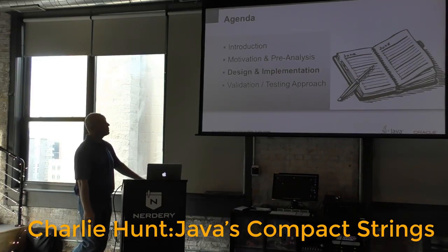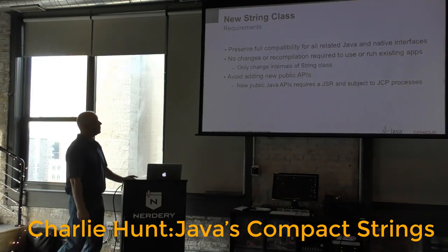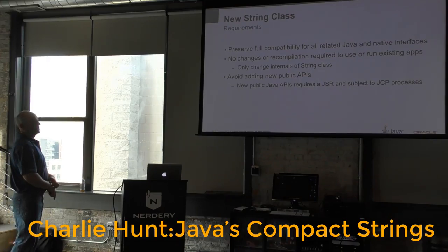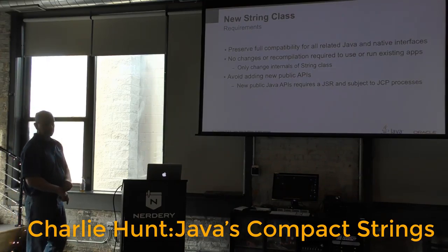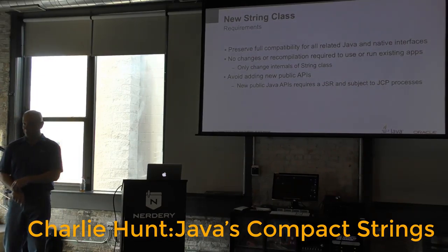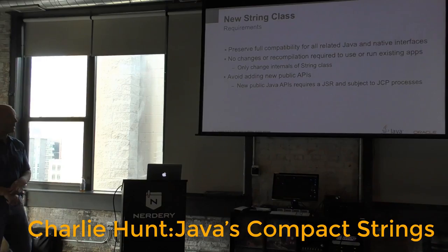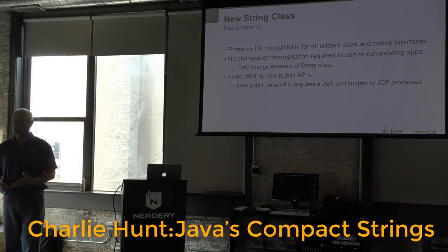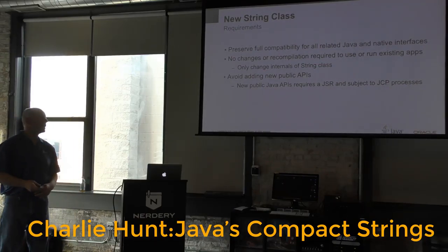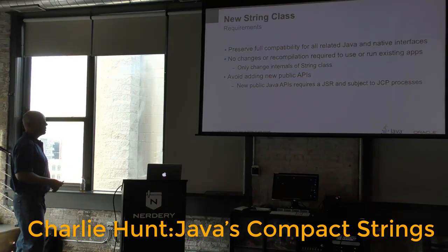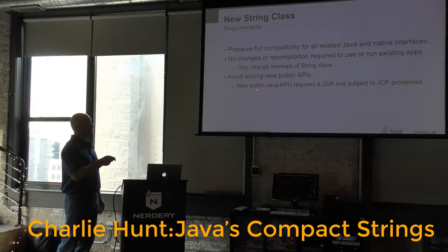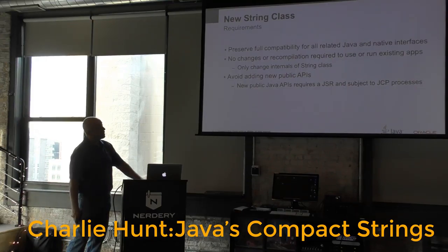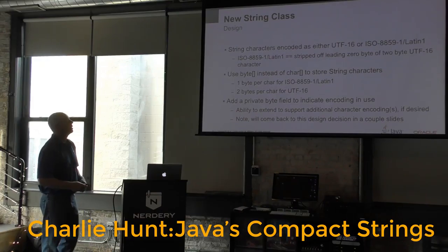Shifting to the design and implementation of the string class. Our requirements were to preserve full compatibility for all related Java apps and native interfaces — no changes required, no recompilation. We're only changing the internal representation of the string class and making changes inside the JVM, and we wanted to avoid adding any public APIs, since that would require a JSR and the JCP process.